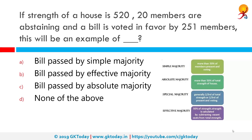If the strength of a house is 520, 20 members are abstaining, and a bill is voted in favour by 251 members, this is an example of a bill passed by Simple Majority. Simple Majority is a majority among members of the house present on that particular day and voting.